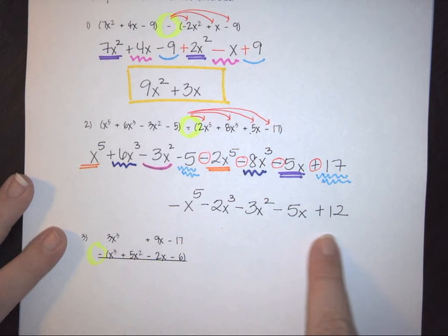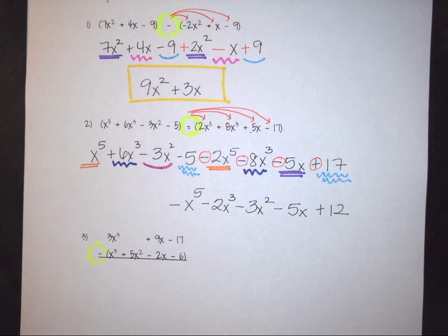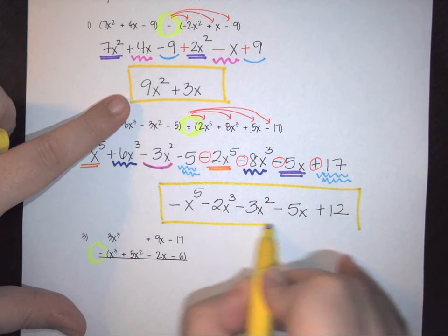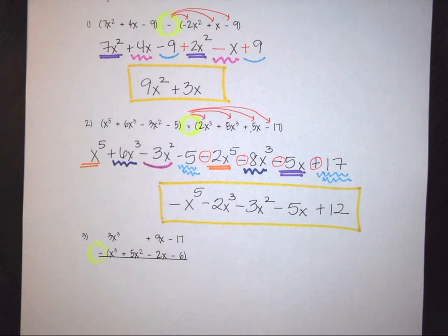If you look, all of my terms have been combined. My polynomial is written in descending order. Therefore, this would be the result that I was looking for.